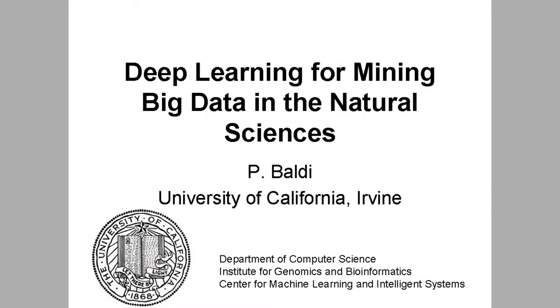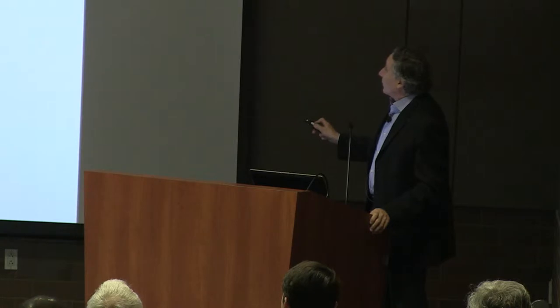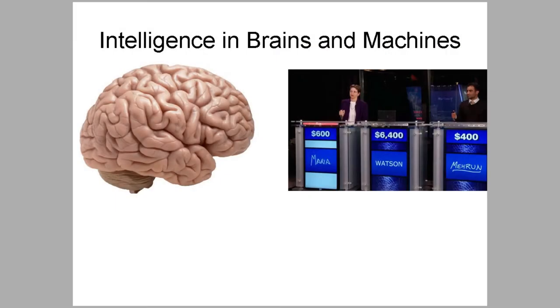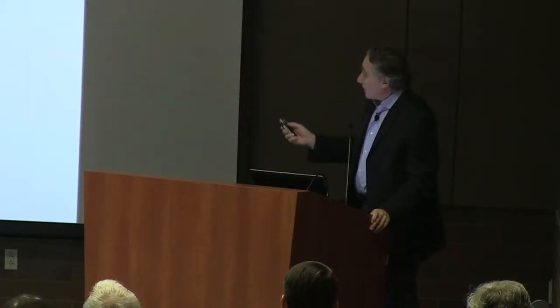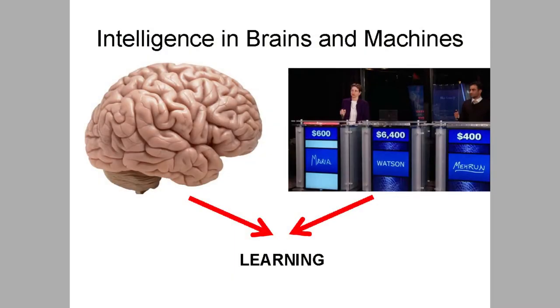What we're really interested in is intelligence in brains and machines. This is the IBM supercomputer Watson that achieved superhuman performance in a TV game. If you look at these two systems and how they deal with big data, it is very instructive to look at the similarities and the differences. I will end on the differences, but first let's look at the similarities.